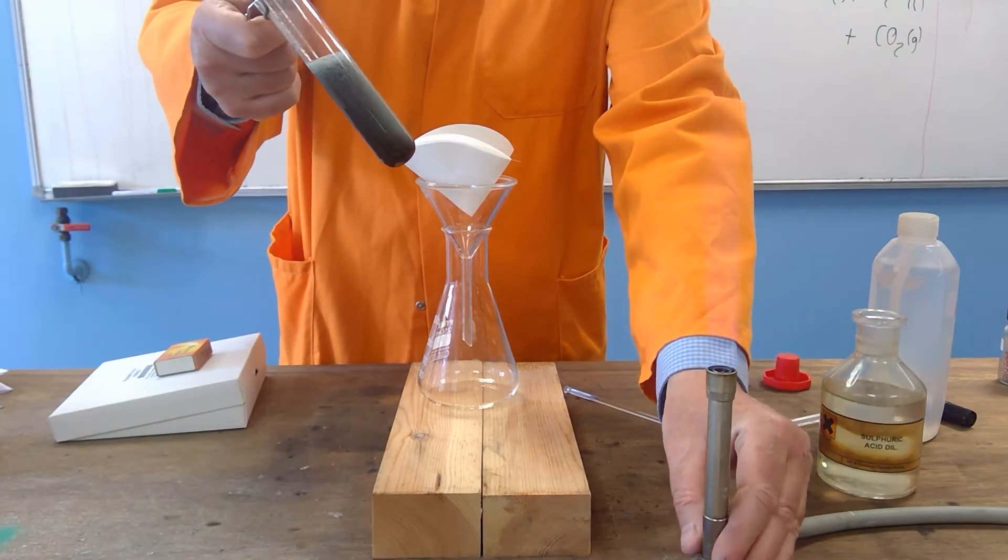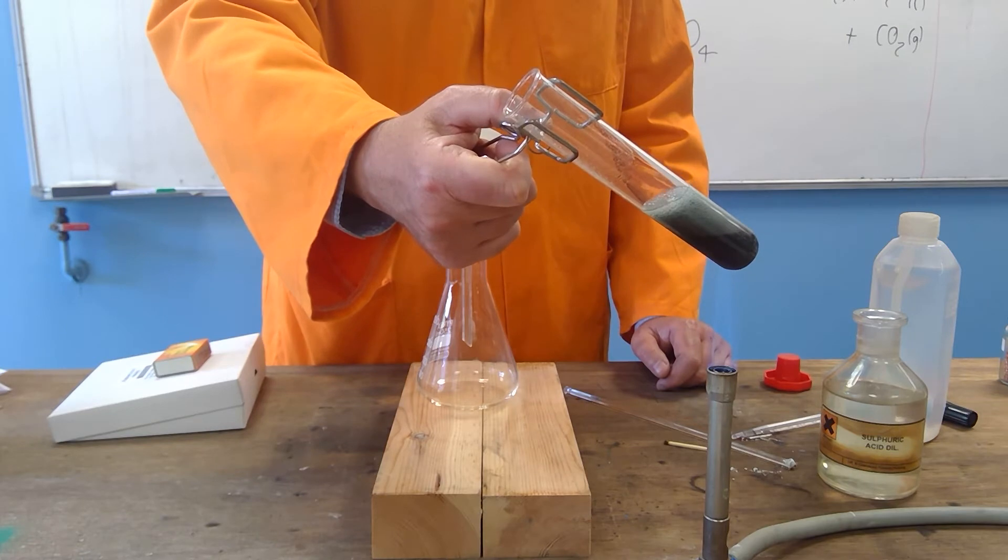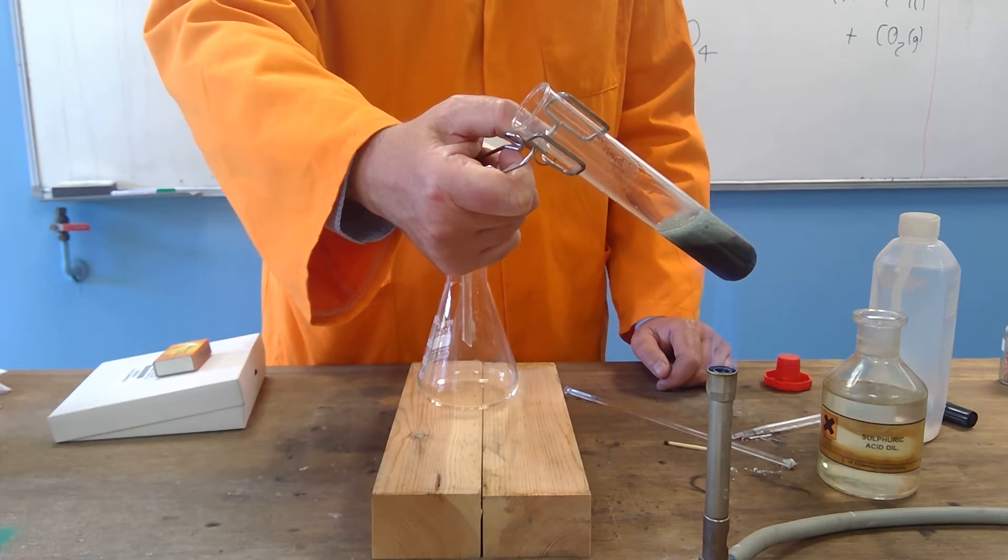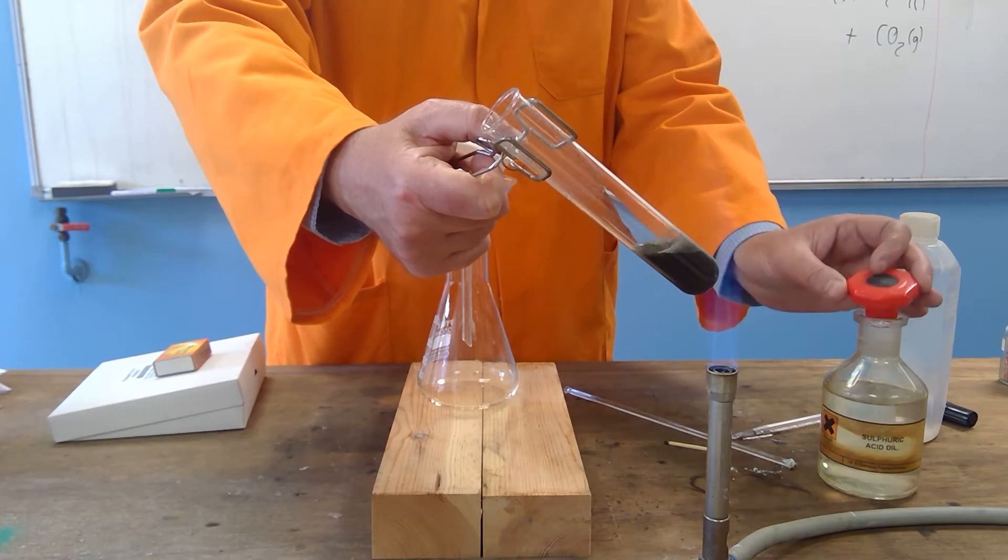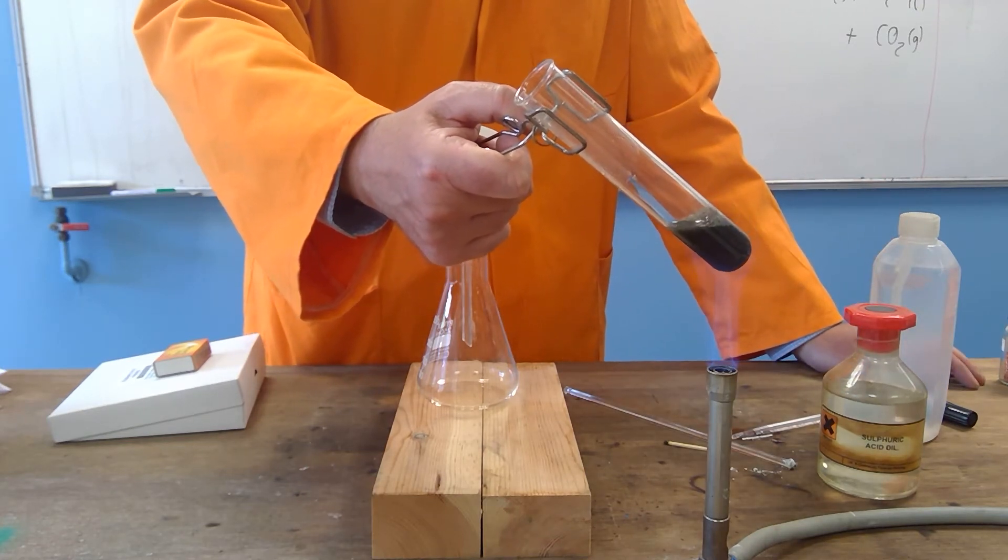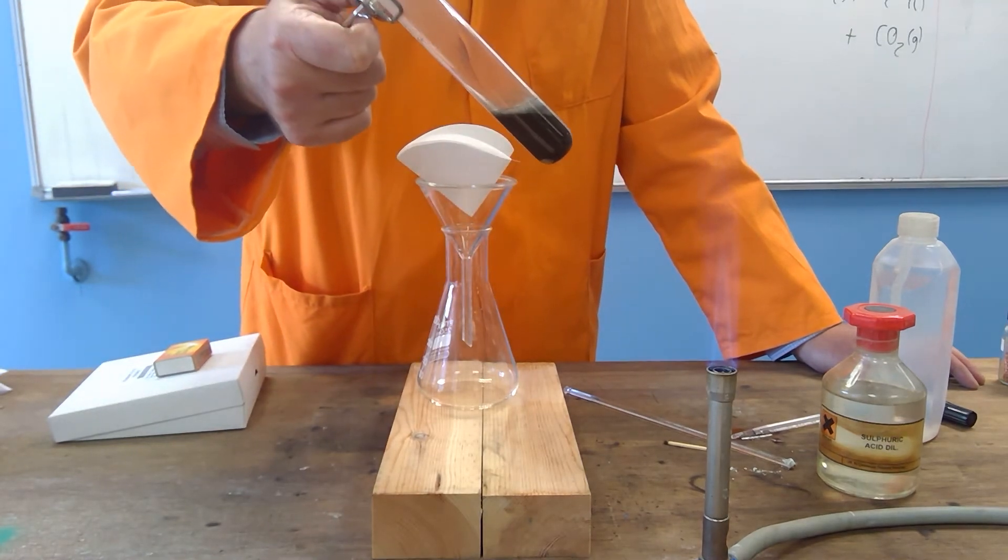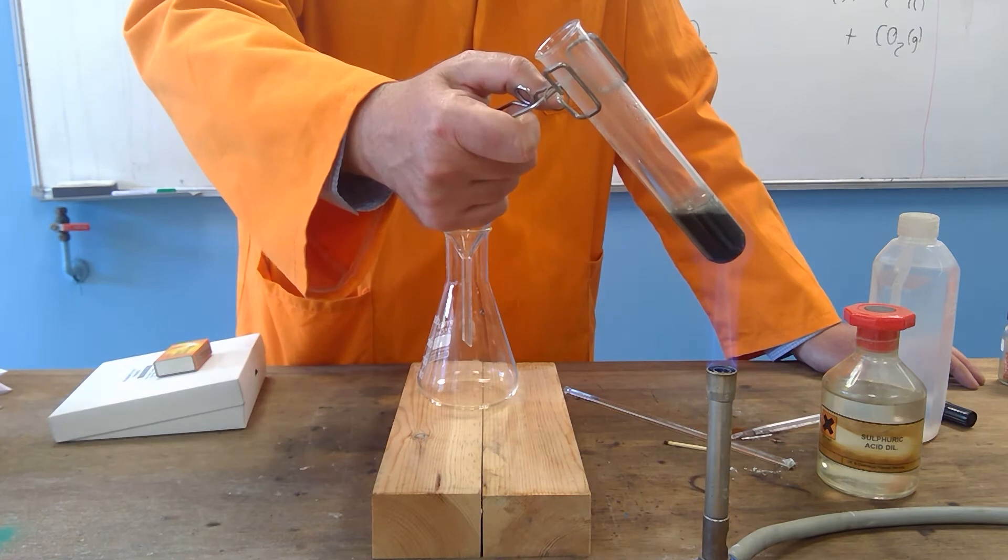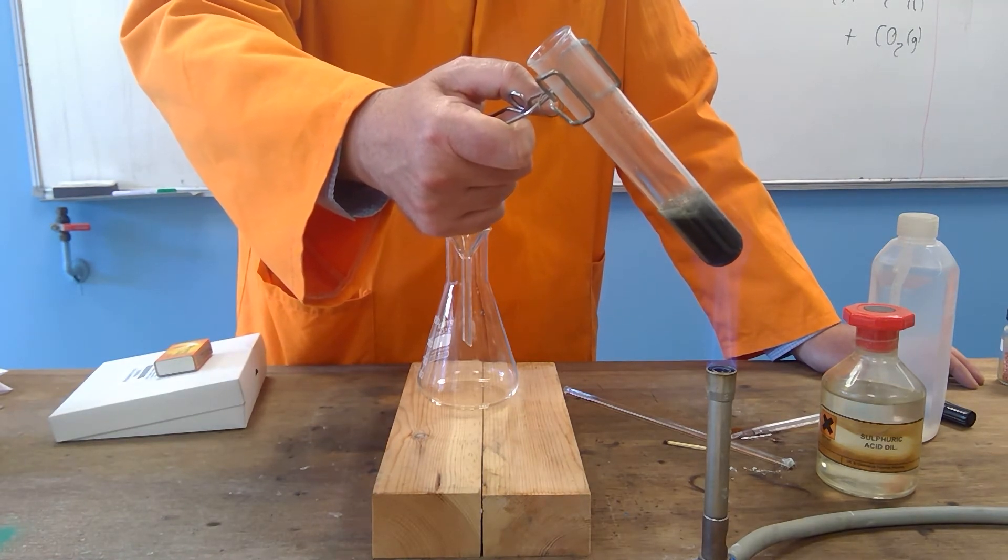If I heat sulfuric acid with copper oxide, I'm providing more kinetic energy for the particles. There'll be more collisions per unit time per second, and I've got that giving it a lot of energy, and the black copper oxide will react with sulfuric acid in a displacement reaction.